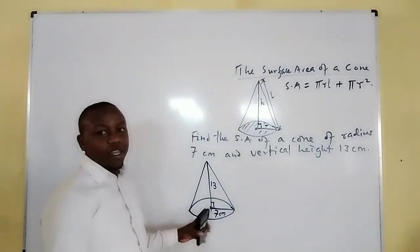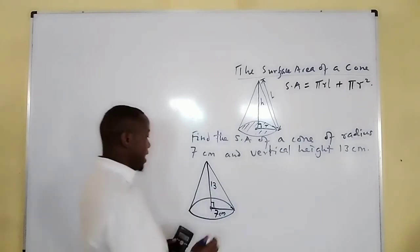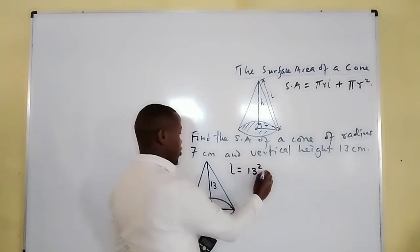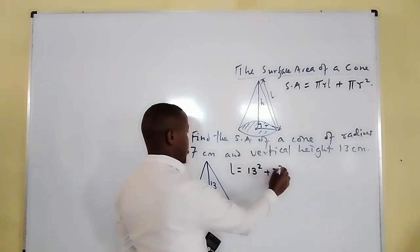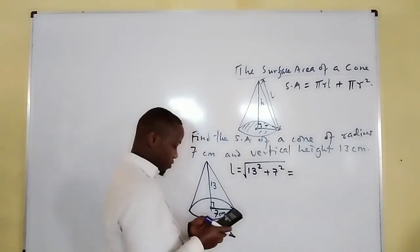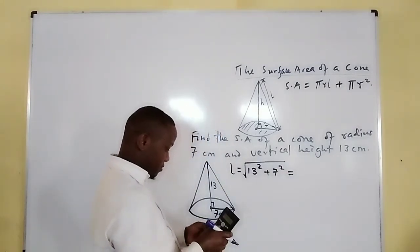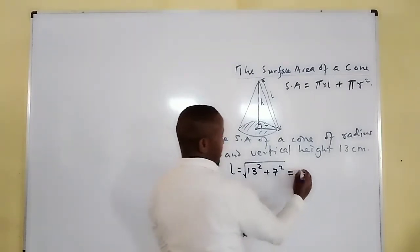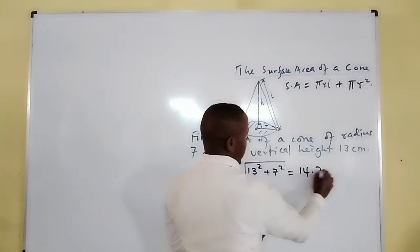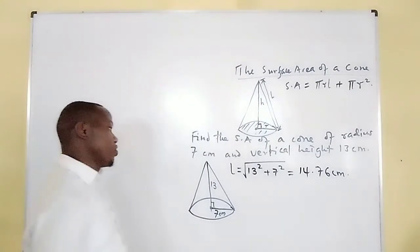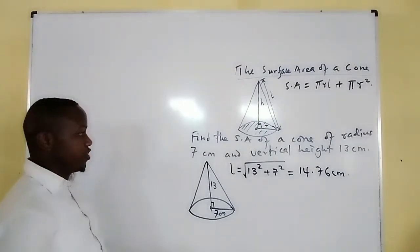because the vertical height and the radius are meeting at a right angle, we can use Pythagoras theorem to obtain the sloping height. Therefore L from Pythagoras theorem will be given by √(13² + 7²), and this will give us 14.76 centimeters.